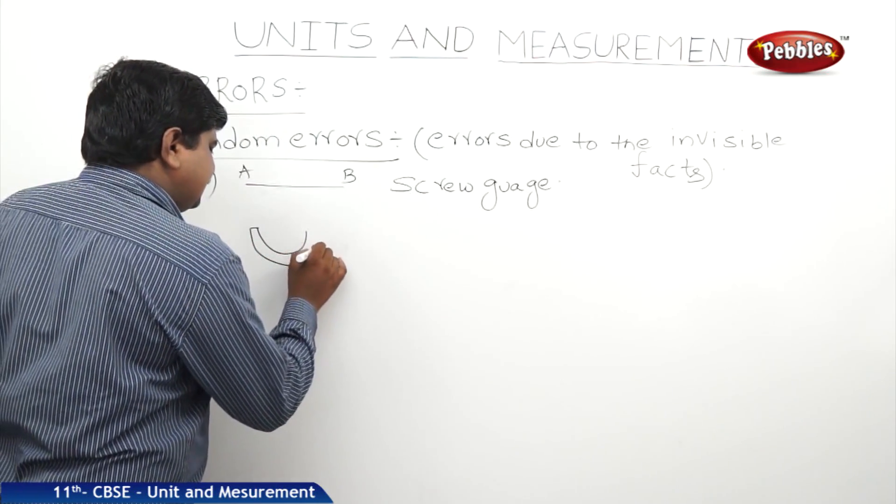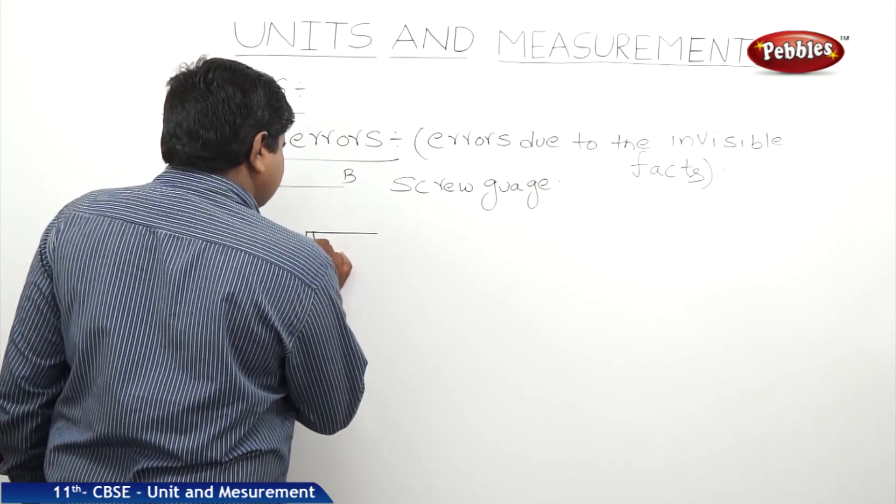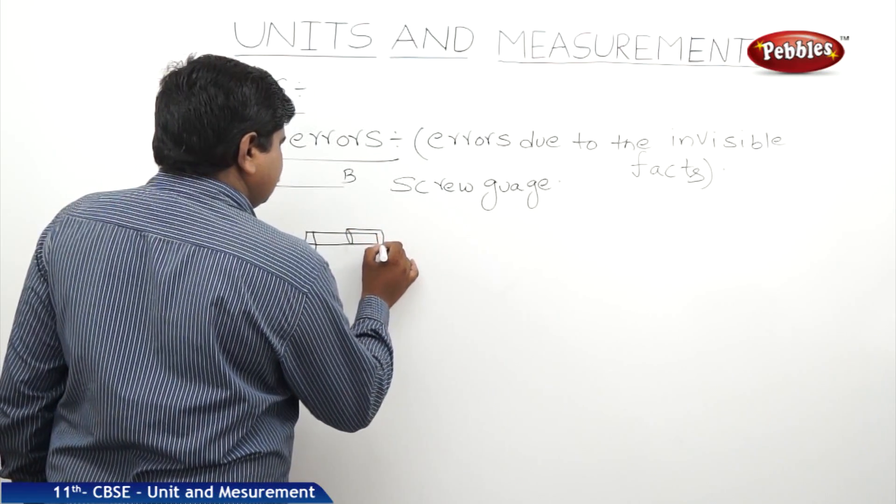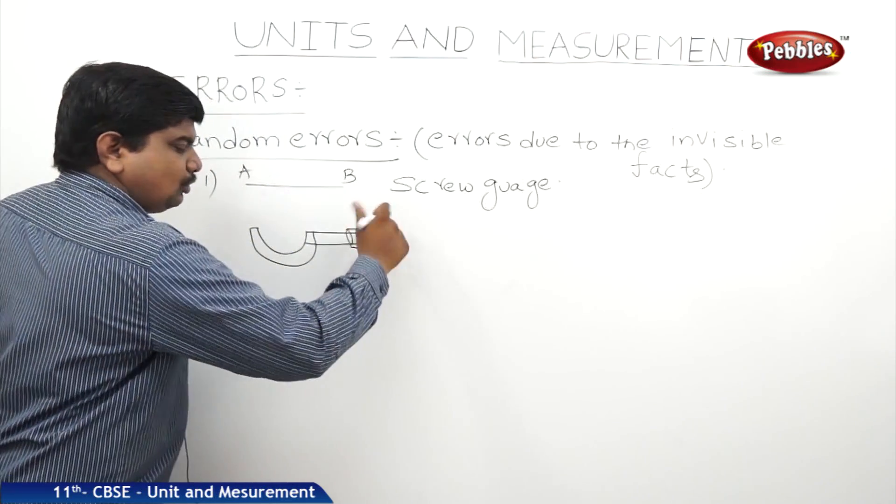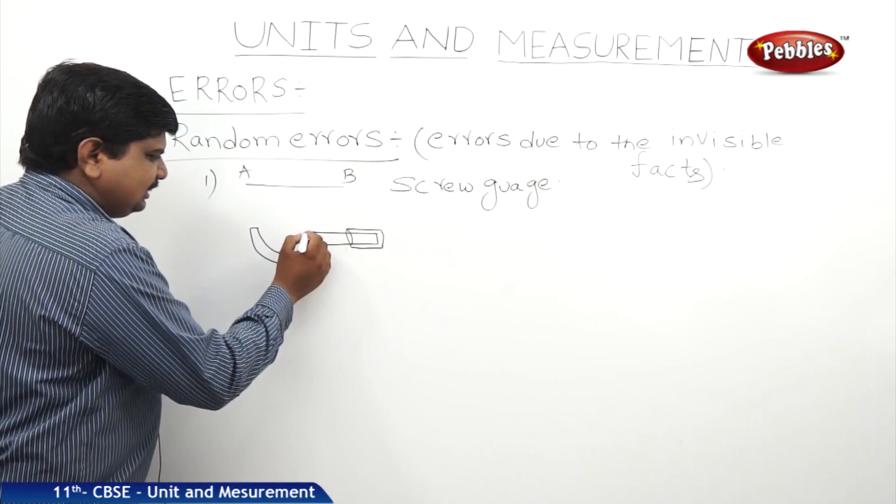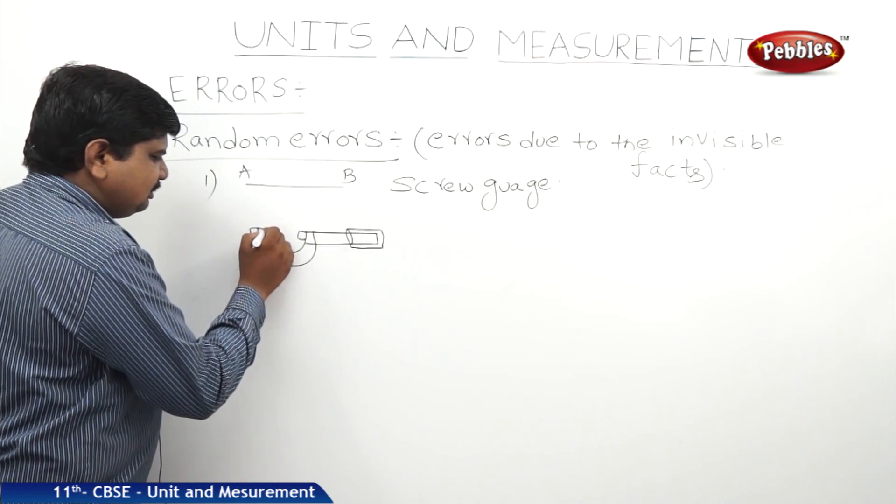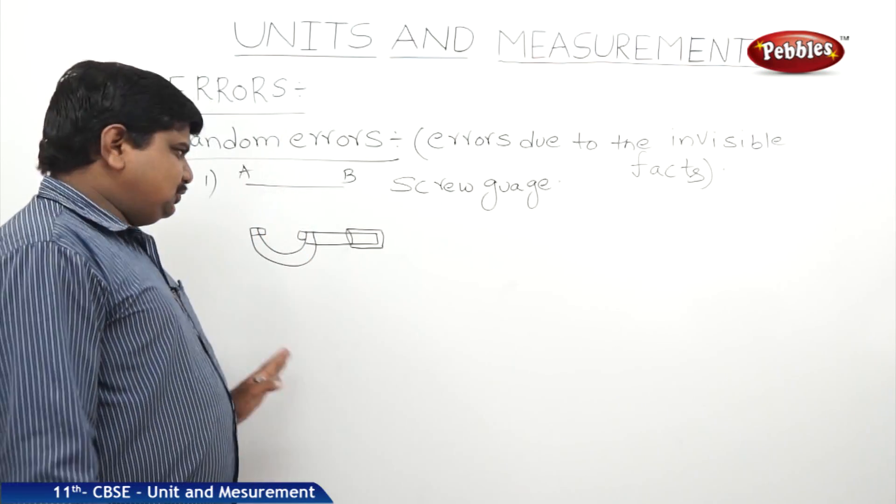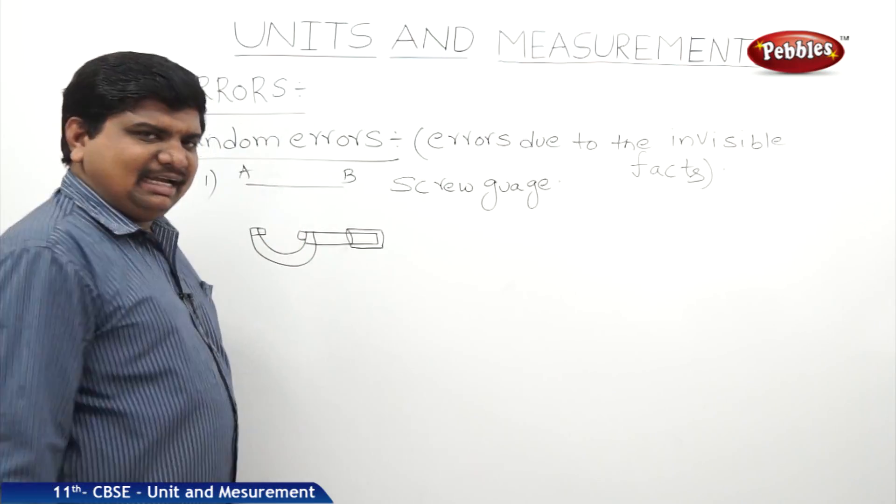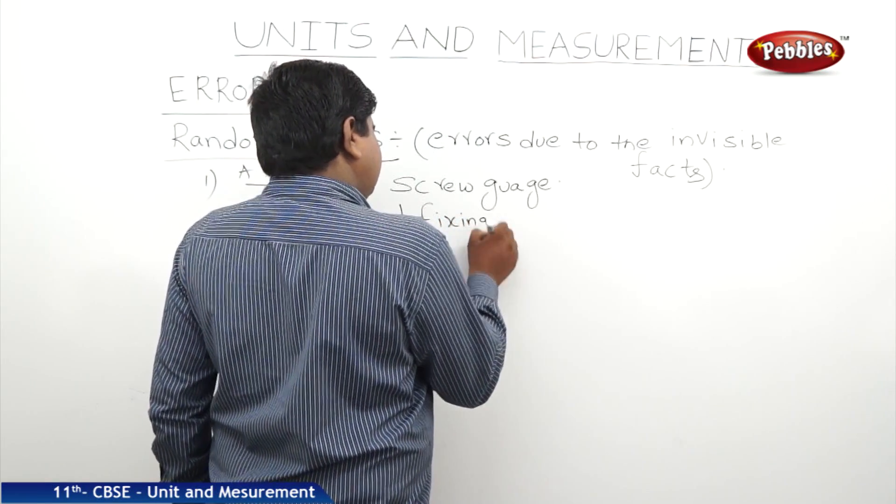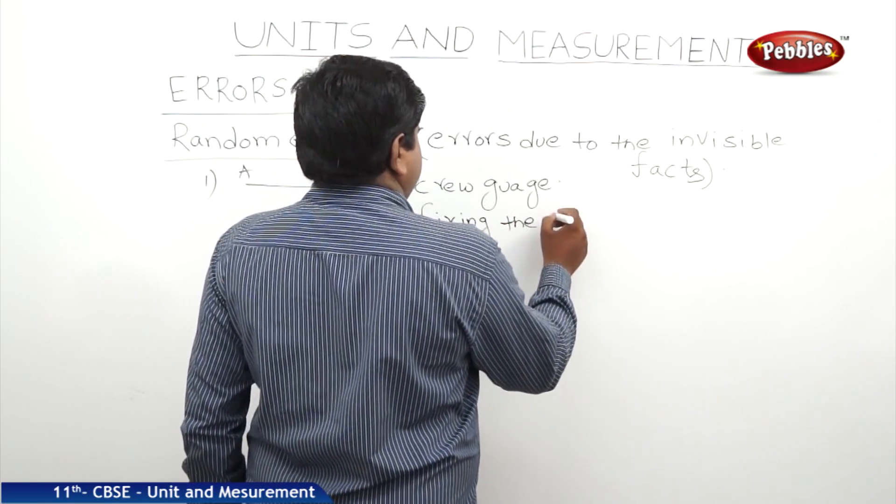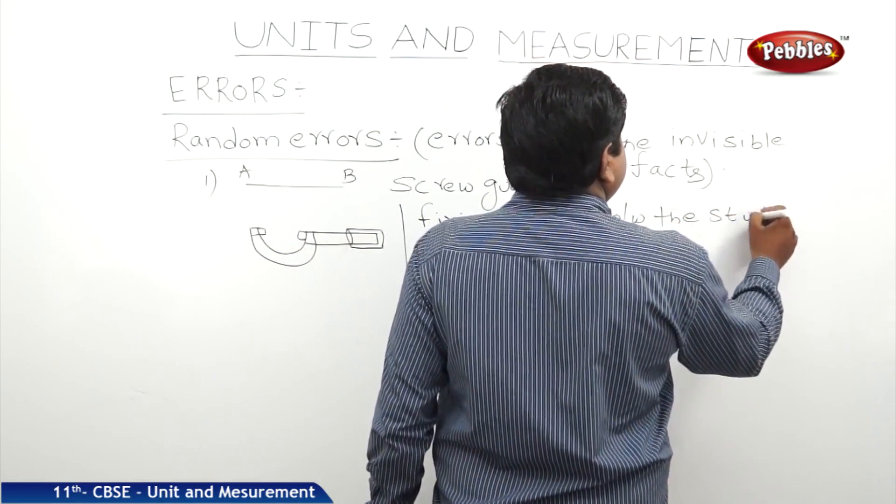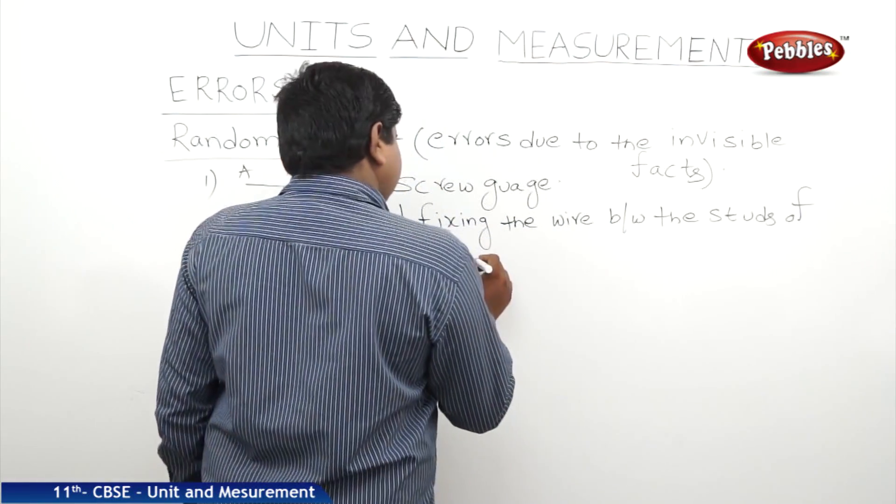The structure of the screw gauge is like this. I am drawing a rough sketch. So it is a mounted one. Now we used to rotate this one. While you are rotating, the studs will come forward. Already one stud will be fixed here. We should keep this wire between these studs. If a student is not fixing properly while he is repeating the experiment, fixing the wire between the studs of screw gauge.